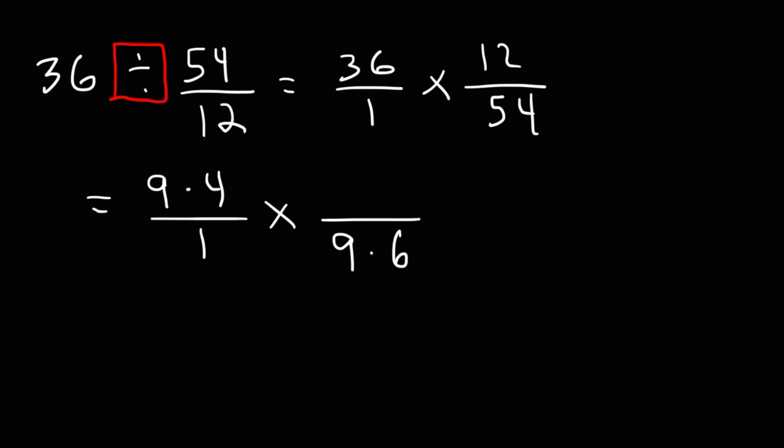Now 12, we can write that as 2 times 6. 12 could be 3 times 4, 6 times 2. But 6 times 2 is the best because we can cancel out a 6. And here we can cancel a 9. So we're left with 4 times 2 on the top, a 1 on the bottom. So we get 8 over 1, which is 8.